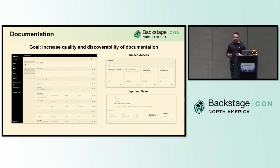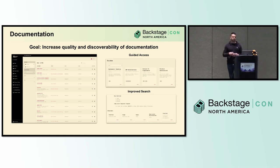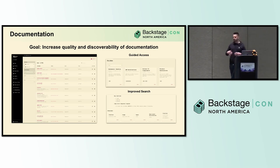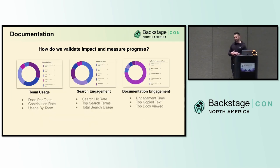We quickly got documentation into Backstage and automated publishing across all repositories to minimize effort from other teams. It was able to be searched, which was good. From there, we introduced convenience features like making common documentation quickly addressable from different parts of our Backstage instance and improved search capabilities. We also used a template to encourage teams to create documentation in the way we wanted it done. But just getting documentation into Backstage didn't really guarantee we were increasing quality or discoverability.